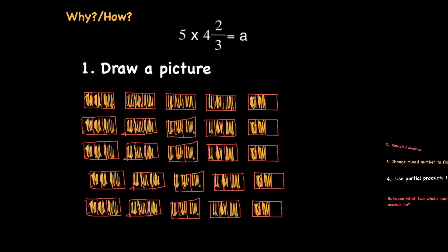And as you can see, I have drawn some bars and colored in to represent 4 and 2 thirds five times. So this would be my 1 whole, 2, 3, 4, and then here's my 2 thirds.